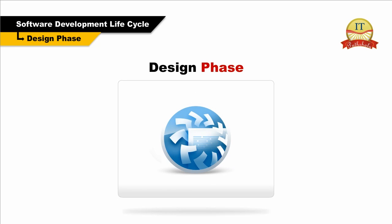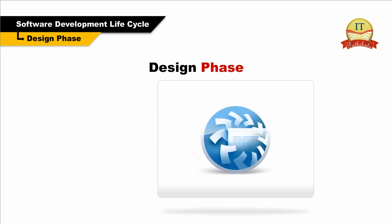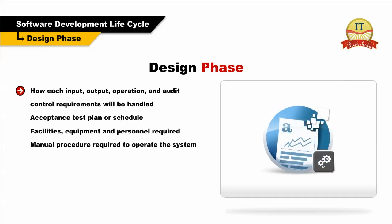Design Phase: At this point, the emphasis changes from defining the user's requirements to defining how the system will work. The documentation developed is technical and is referred to as design specification. The design documentation should specify how each input, output, operation, and audit control requirement will be handled.